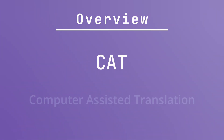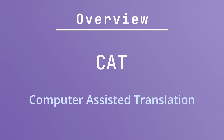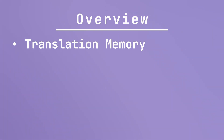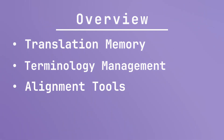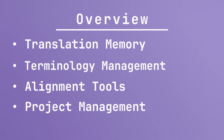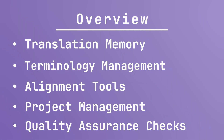CAT is an acronym that stands for Computer Assisted Translation. CAT tools are commonly used in professional translation settings and offer benefits such as translation memory, terminology management, alignment tools, project management, and quality assurance checks. The process of CAT tools begins with text analysis.